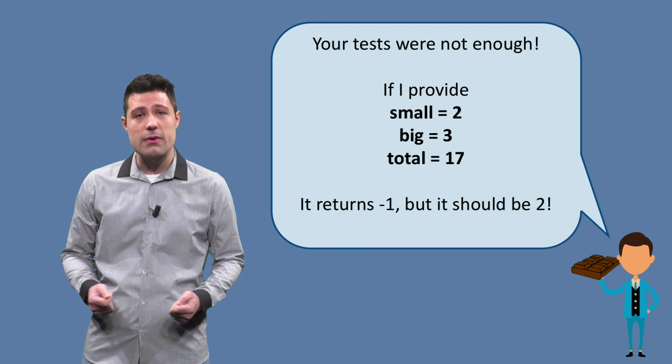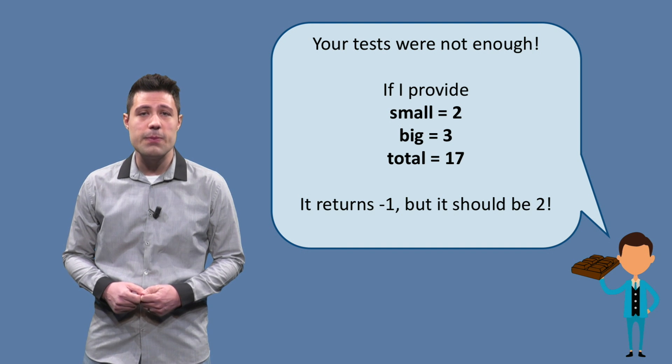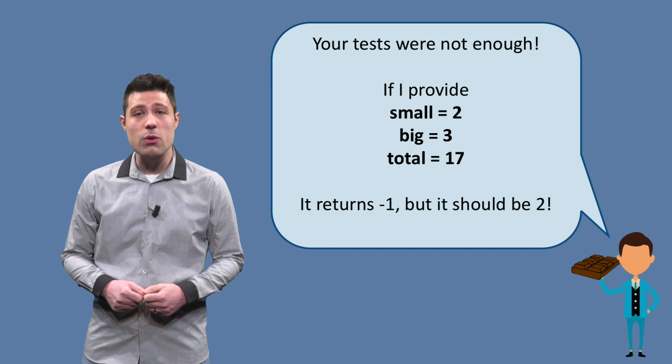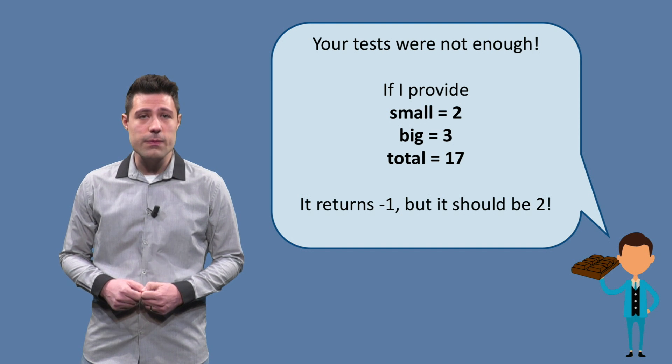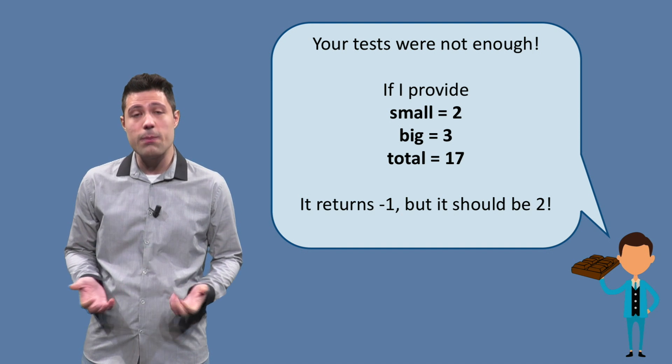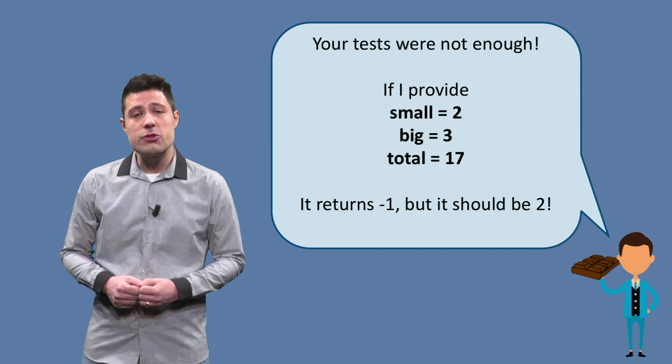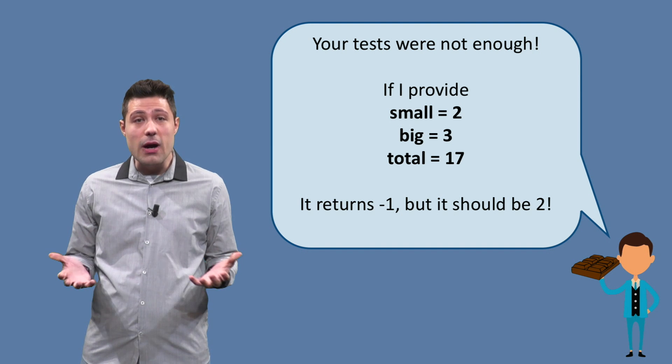If we provide as an input small equals to 2, big equals to 3, and total equals to 17, we expect the output to be 2, as we would need two small bars. But our software returns minus 1, which is a bug.